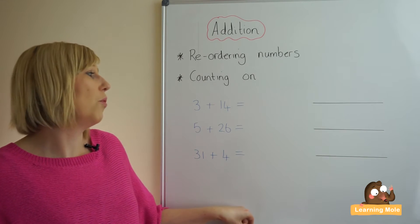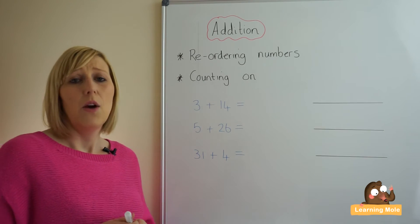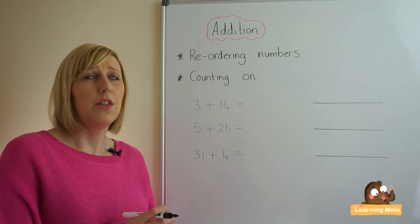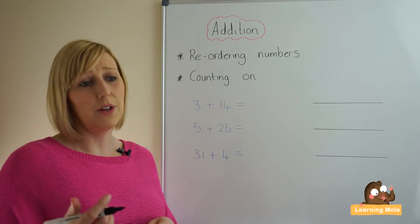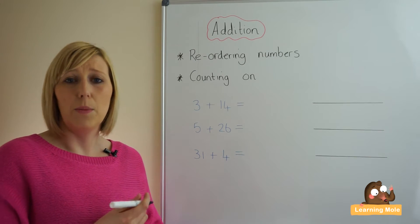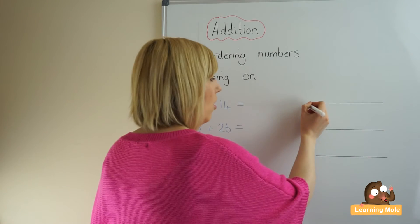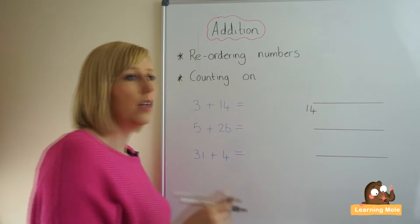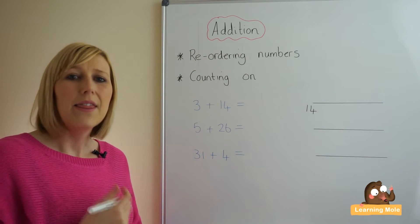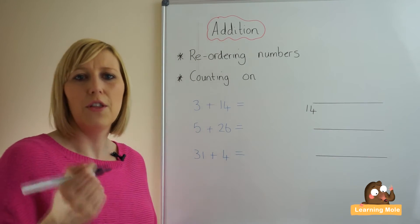So once they have reordered their numbers we want to say right, so the first calculation 3 plus 14, we have reordered it to 14 plus 3, we are putting the 14 in our heads. That is the same as putting the 14 onto our blank number line. So we have got the biggest number 14 in our heads. Then we are going to count on 3.